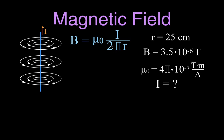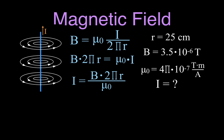We use the same equation, but rearranged and solved for current. Doing cross multiplication, B times 2πr equals μ₀ times I. Dividing both sides by μ₀, we get that I equals the magnetic field B times 2πr — the radius or distance away from the wire — divided by μ₀.